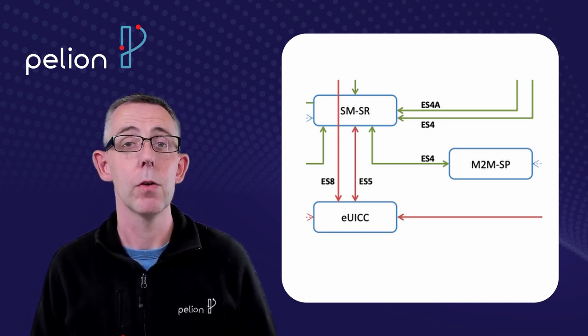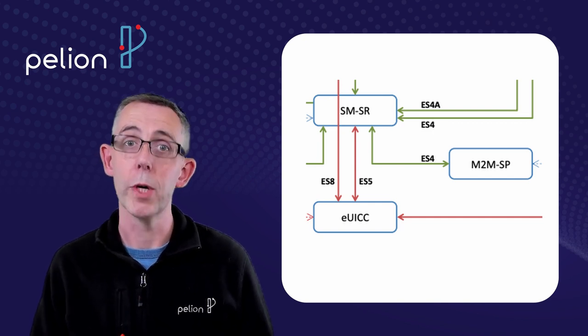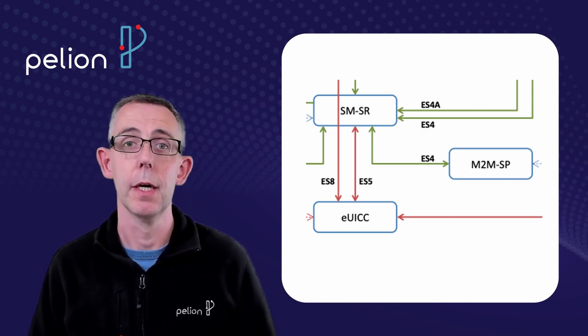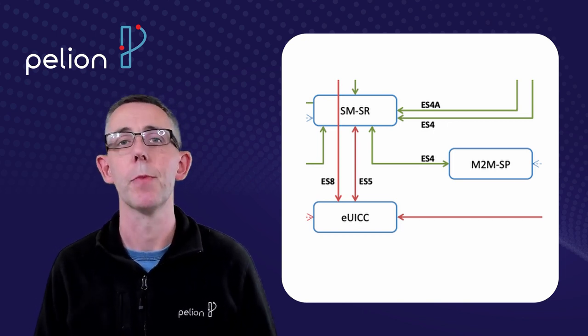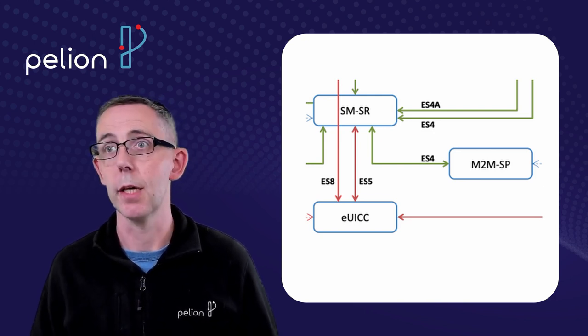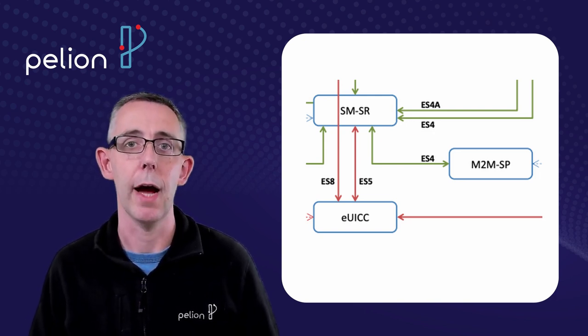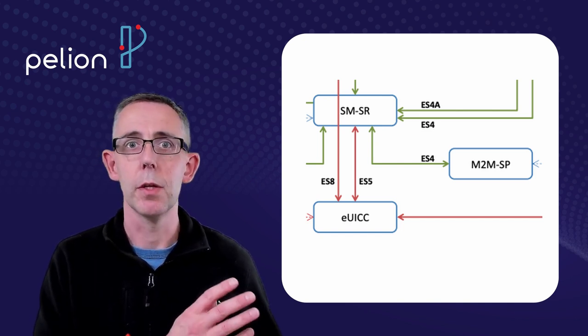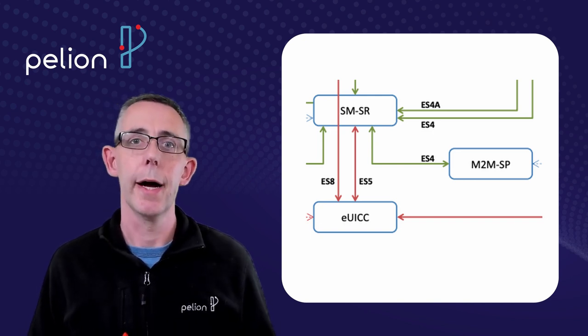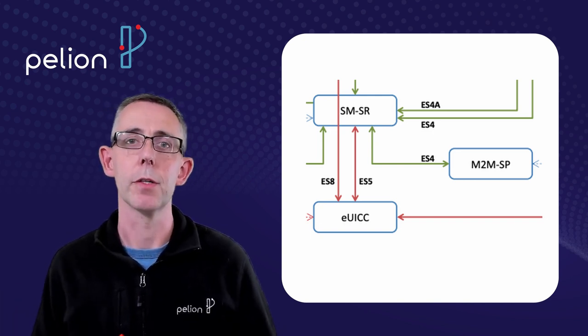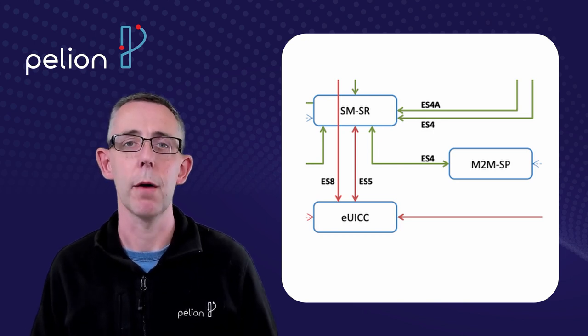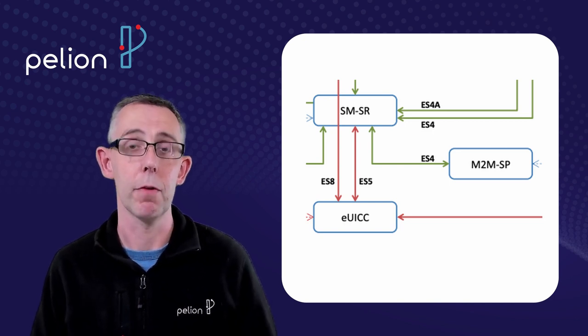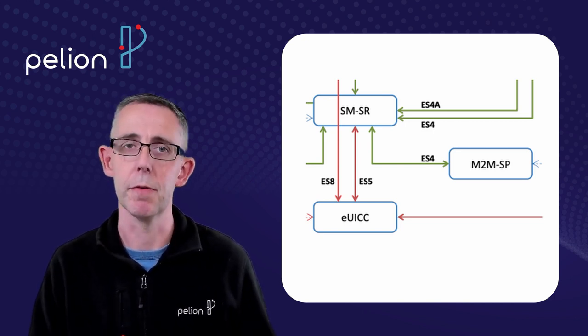So typically you will have rules set up for which profiles to use in which devices that could be country specific it could be tariff or even product specific and when the device first connects home say it is a vending machine and you want to have one version of that vending machine but it's sold in the Americas it's sold in Europe it's sold in Asia and you usually work with different cellular providers so you would have a rule set up so that when the device first connects, bootstraps home, a different profile is downloaded to that device specific to that part of the world.